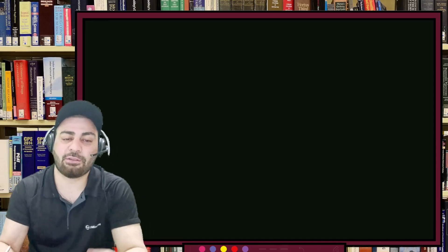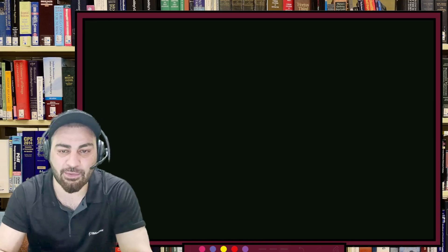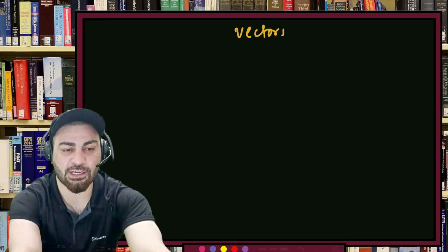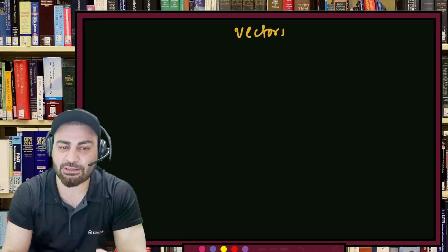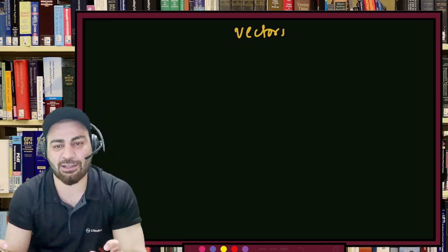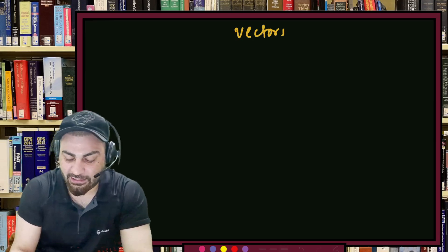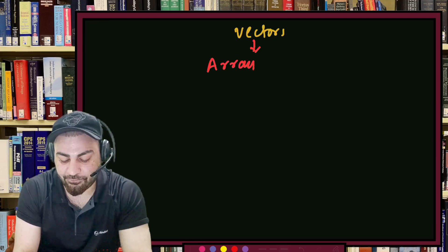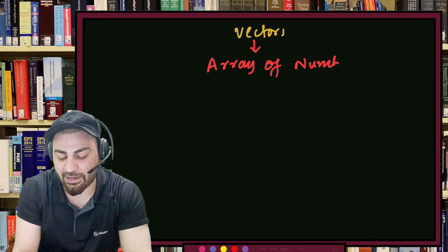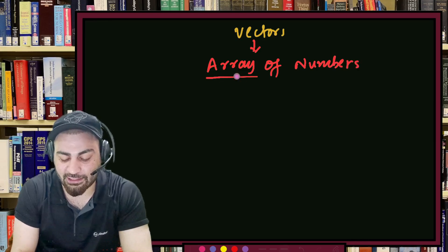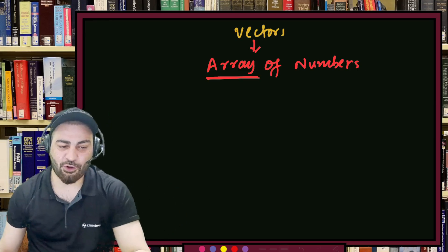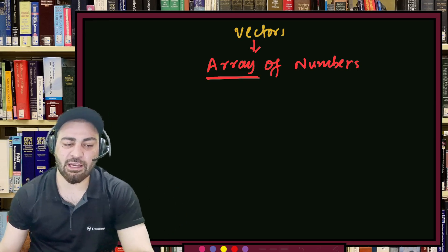In the previous two sessions we discussed vectors. From a computer science perspective, vectors are nothing but an array of numbers — not the data structure array, but meaning a sequence or run of numbers.